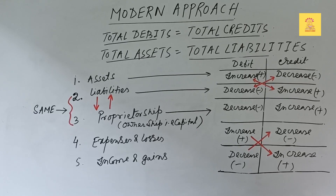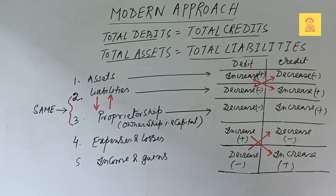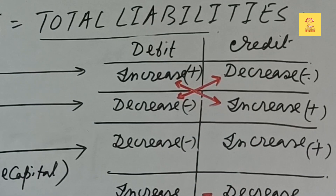As per the norms and conditions of the double entry system, total debits equal total credits. In the modern approach, total assets equal total liabilities, as it is based on the accounting equation. In my next video I will cover the accounting equation in detail, but for now just remember: total assets is equal to total liabilities.